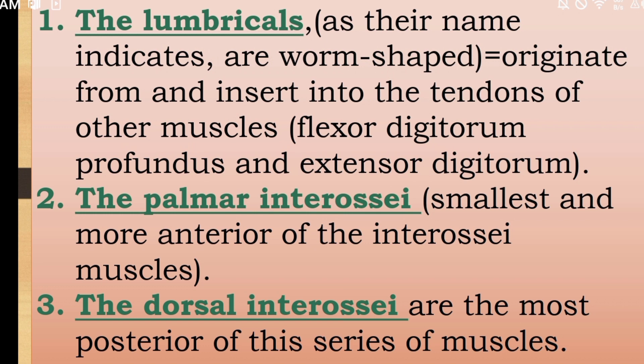The lumbricals, as their name indicates, are worm-shaped. They originate from and insert into the tendons of other muscles — flexor digitorum profundus and extensor digitorum. The palmar interossei are the smallest and more anterior of the interossei muscles.